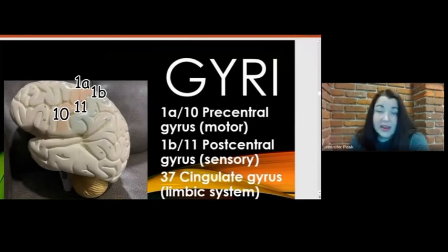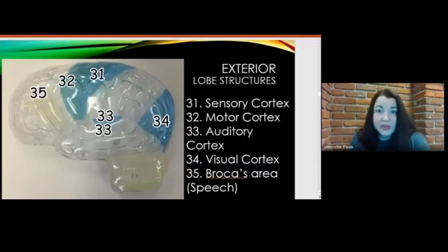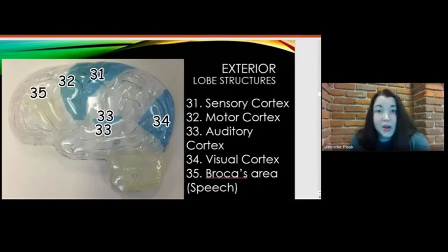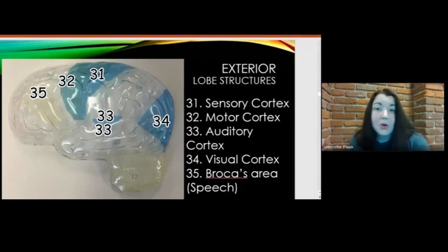The cingulate gyrus is located above the corpus callosum and is visible in a medial view of the brain. It deals with emotions and is associated with the limbic system. On the purple nervous model cap, at number 31 you have the sensory cortex and at 32 the motor cortex. On the brain model these are called the somatosensory cortex and somatomotor cortex, corresponding to the postcentral gyrus and precentral gyrus respectively.